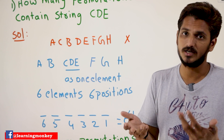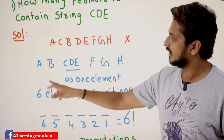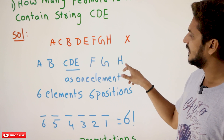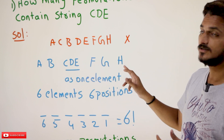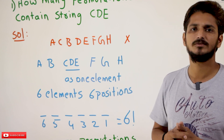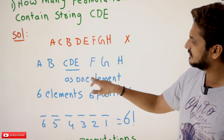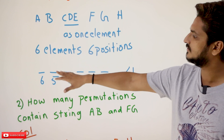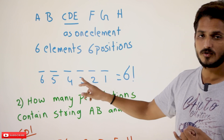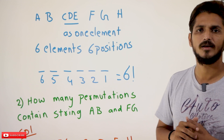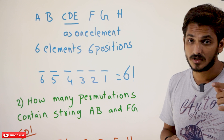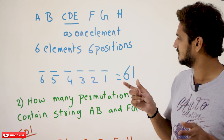This is the point you need to understand. If you understand this, solving it is very easy. So A is one element, B is another element, C, D, E combined together is considered as one element, then F, G, H. Now we have a total of 6 different elements. These 6 different elements can be arranged in 6 different positions in 6 factorial ways. The first position can be filled in 6 ways, then 5, 4, 3, 2, and 1. So total arrangements containing C, D, E as a string is 6 factorial ways.